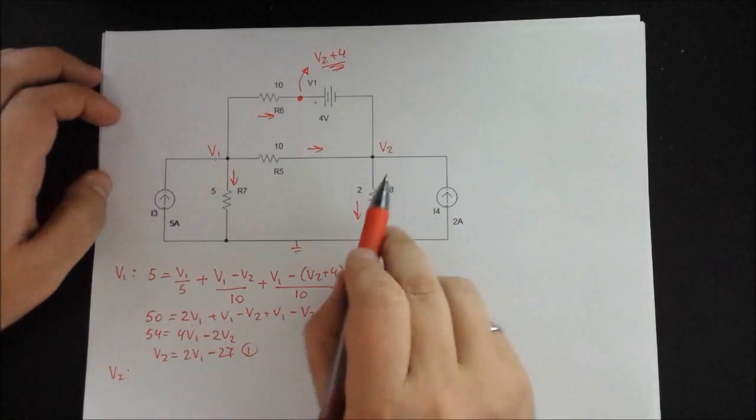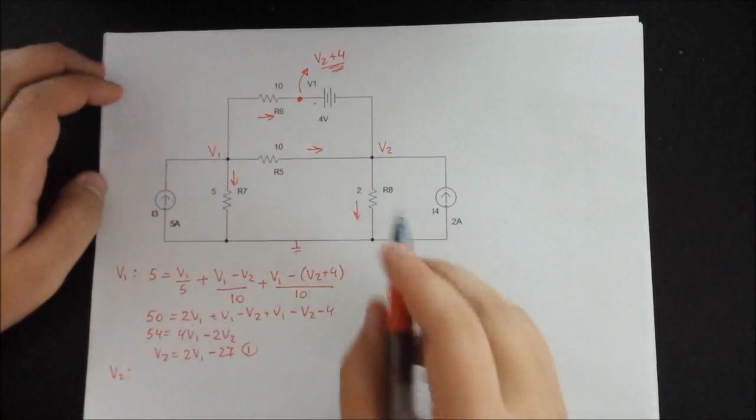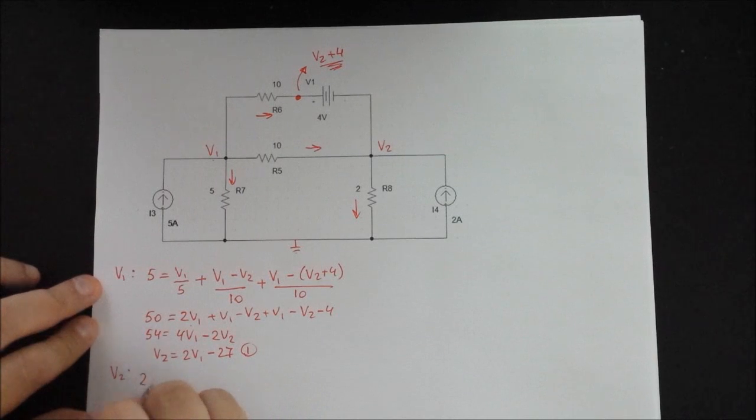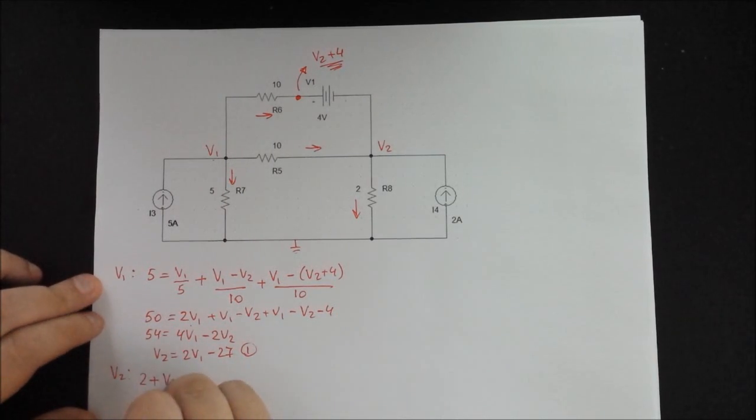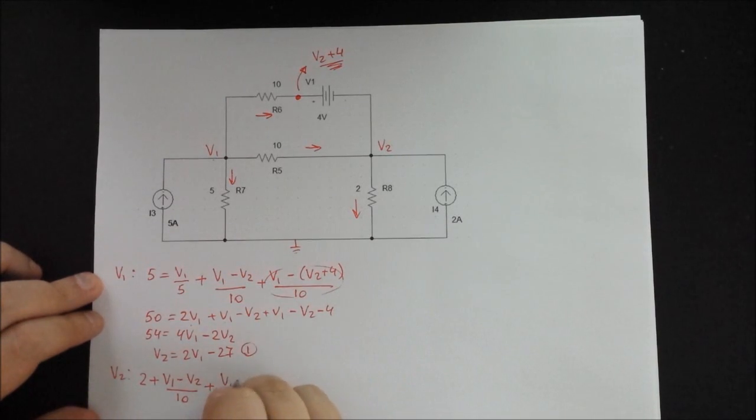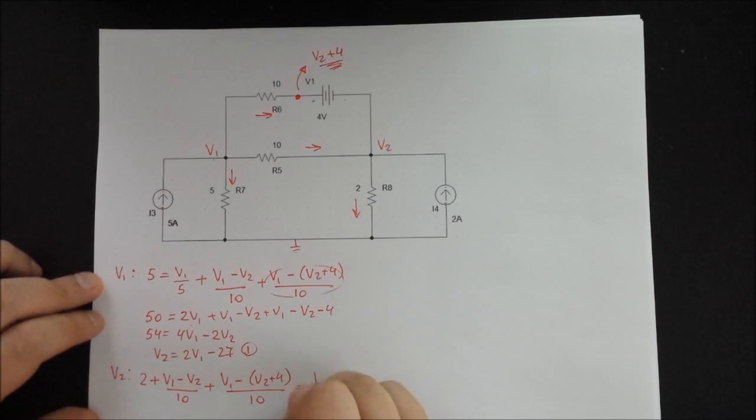And we write the same thing for V2. So we have 1, 2, 3 currents coming in and 1 coming out. So we can write 2 plus V1 minus V2 divided by 10. Plus this same current, which is V1 minus V2 plus 4. All that is divided by 10 and all that is equal to V2 divided by 2.